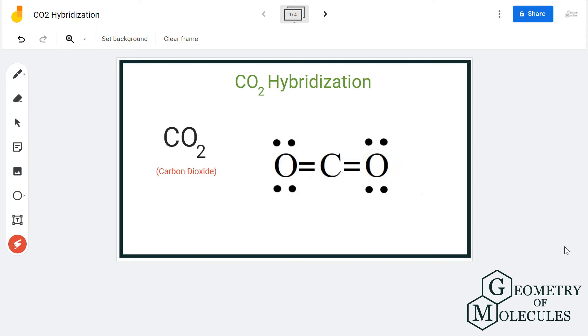To understand its hybridization, we will first go through its Lewis structure and then proceed with finding steric number to know the hybridization. So here is the Lewis structure of CO2 molecule in which one atom of carbon is forming a double bond with both these oxygen atoms.